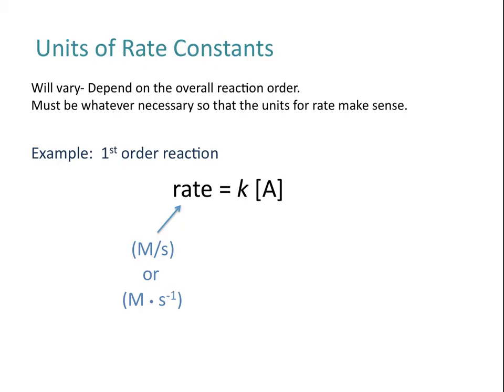Let's say we have a rate given in units of molar per second — you could also write this as molar times inverse seconds, which is the same thing. The units for the concentration of your reactant are generally going to be the same as the units of concentration given in your rate, so in this case molar. That means if the rate has units of molar times inverse seconds and our reactant has units of molar, our rate constant must have units of inverse seconds. This is an example for a first order reaction.